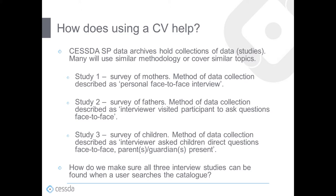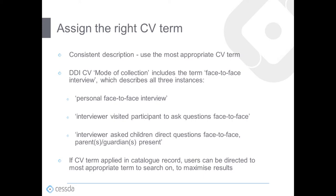Finally, imagine we have a survey of children with a method of data collection described as interviewer asked children direct questions face-to-face, parents or guardians present. How can we make sure all three interview studies can be found when a user searches the catalog? The first thing is to assign the right controlled vocabulary term — a consistent description that is the most appropriate controlled vocabulary term. In our example, mode of collection includes terms such as face-to-face interview, which describes all three instances of a personal face-to-face interview. If this controlled vocabulary term is applied in the catalog record, users will be directed to the most appropriate term to search on and maximize their results.